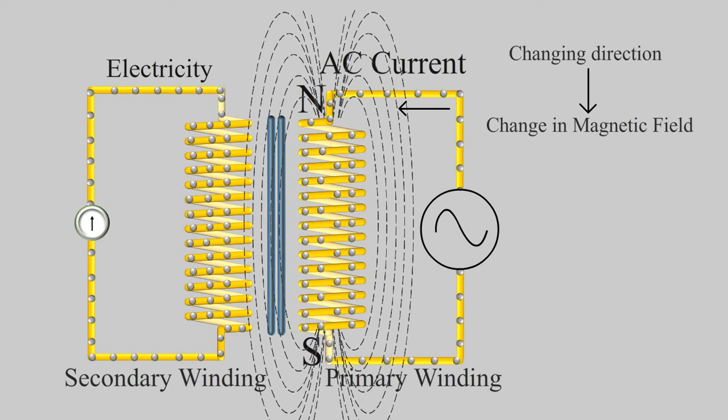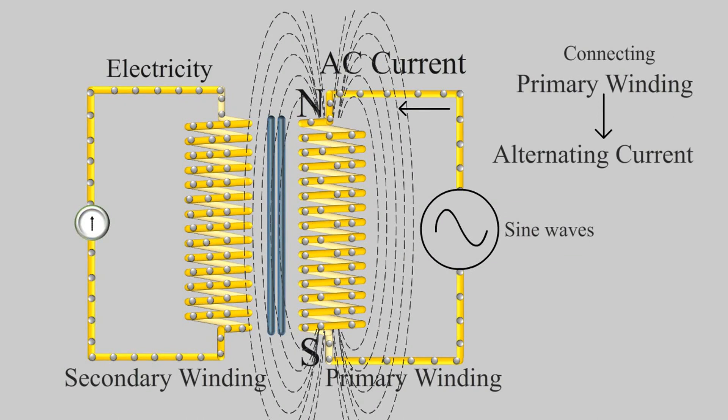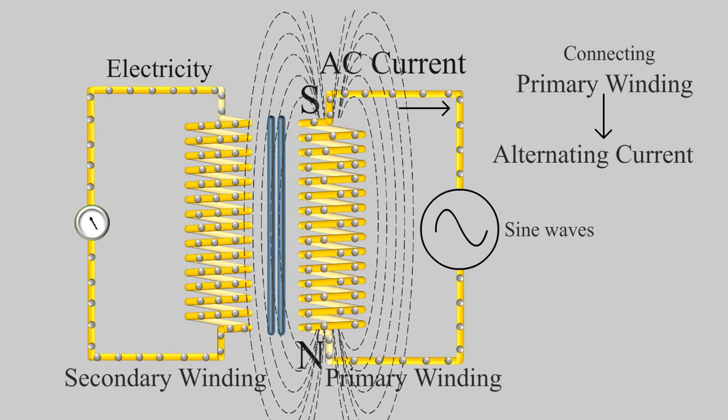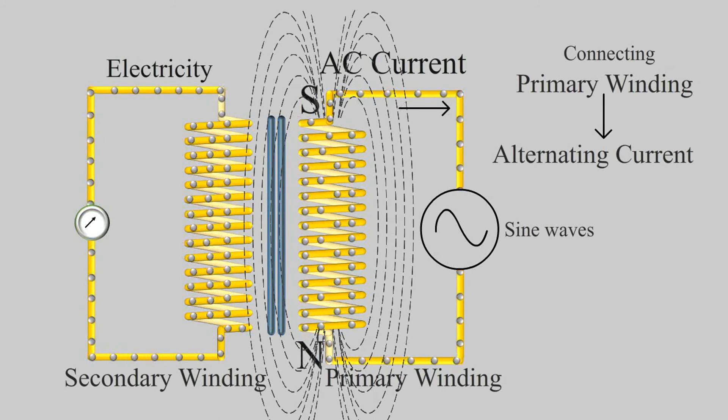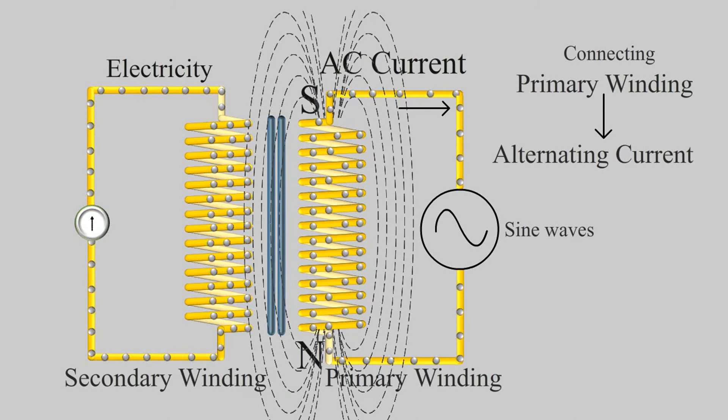As alternating current flows in sine waveform its direction of flow continuously changes. So by simply connecting the primary winding with AC supply you get electricity flowing in secondary winding without any moving parts or requirement to swap terminals each time to change the direction of flow of current.